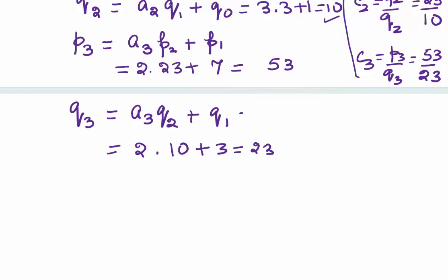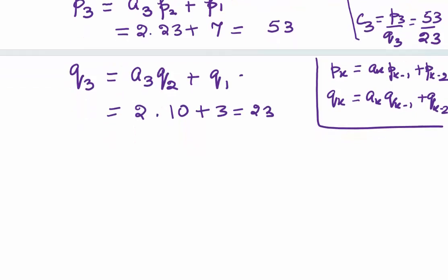Once you get this, remember the formula which we have already seen in the theorem has been used here. I am writing them once again. Your Pk is found using ak·P(k-1) + P(k-2), and Qk, all you have to do is in place of P write Q. So ak·Q(k-1) + Q(k-2).